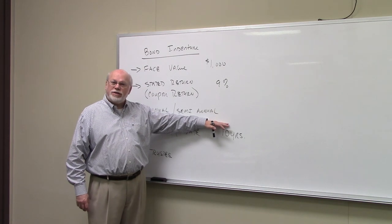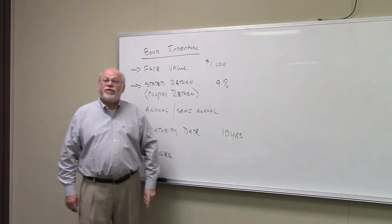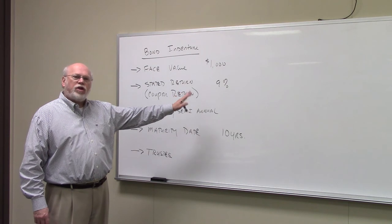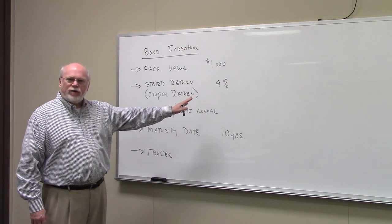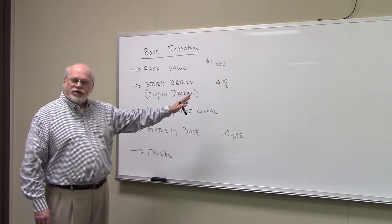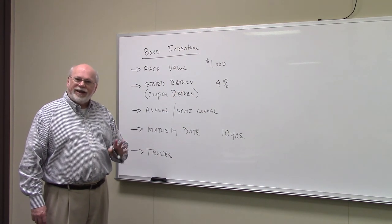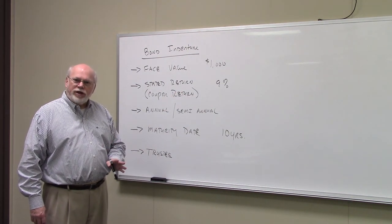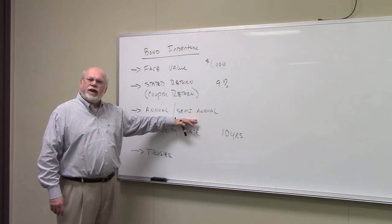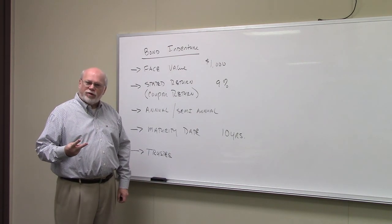How do you define the payments that you're going to get? Well, you take the stated return of the bond and you multiply it by the face value of the bond. You'll find out as we go through here, the only thing you ever do with the stated return on the bond is you multiply it by the face value. If you take 9% of $1,000, .09 times $1,000, you come up with $90. That's $90 per year that you'll get in interest.